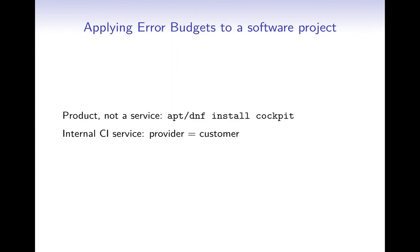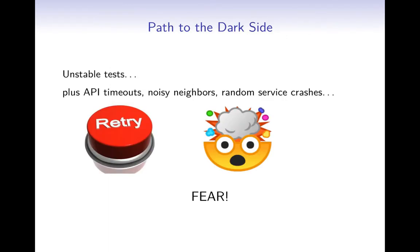For that internal service, SLOs and error budgets very much do apply. It's a little easier because this is an internal service — we are our own provider and customer, we have a tight feedback loop, and we don't need to play any blame game. In the past we had long phases of slowly deteriorating tests and unstable infrastructure, so we got used to hitting the retry button a lot until stuff passed. This was frustrating, made it hard to land work, and we became afraid to touch code with known unstable tests.